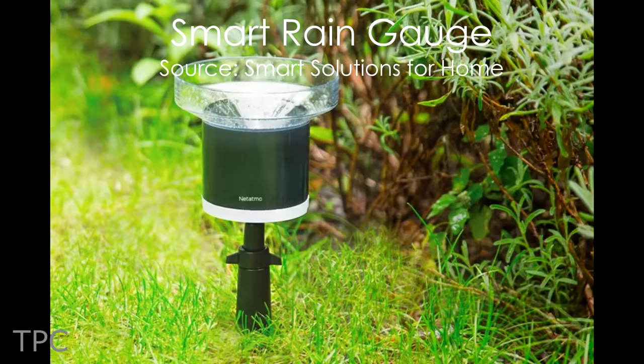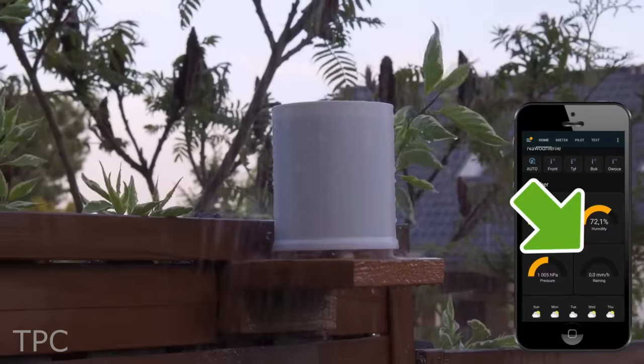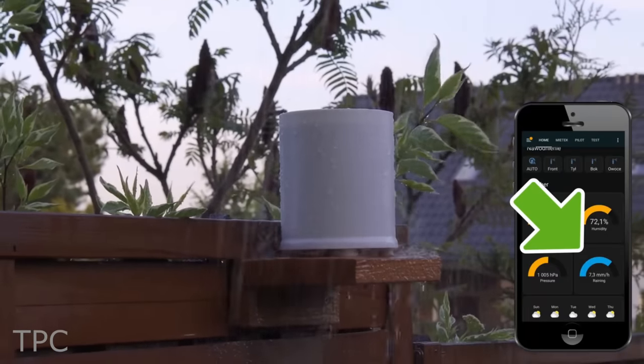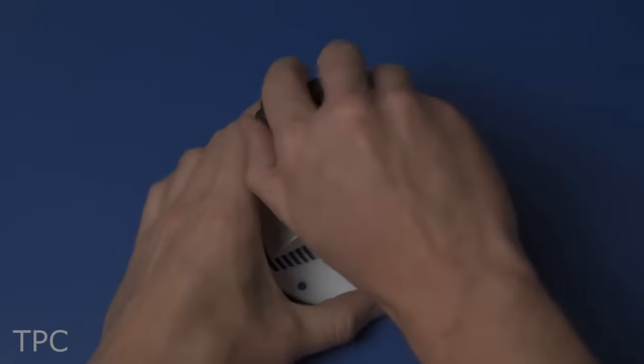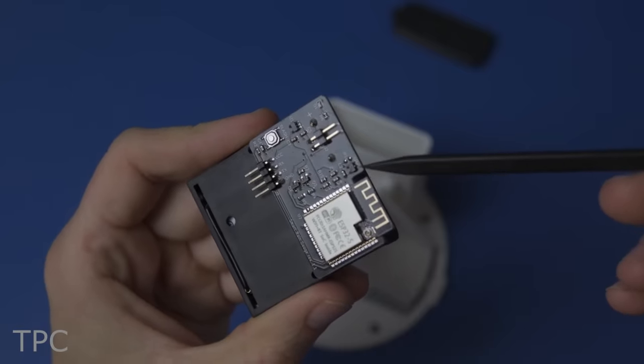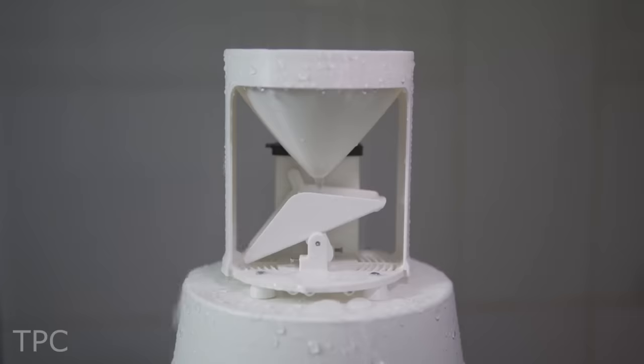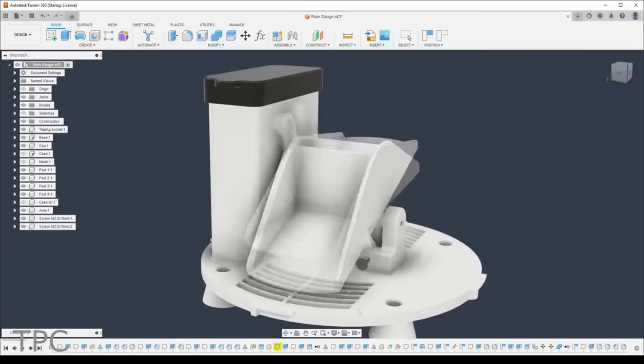You might have seen various rain gauges, but this one's a bit different. It not only detects the rain, but also tells you how heavy the rainfall is. It contains a magnet at the top part of the tipping bucket. Inside this tightly sealed container, it has a PCB with a hall sensor. When the bucket swings, the magnetic field changes, and a notification sent to the microcontroller.